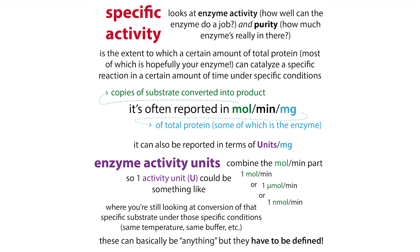When we talk about enzymes, we often talk in terms of activity units. An activity unit is basically whatever people define it to be under specific conditions — for example, the conversion of one mole of substrate to one mole of product in a certain number of minutes. It's specific to the enzyme and has to be different for different enzymes because they do different things. That is their activity — it's a measure of how much work gets done.